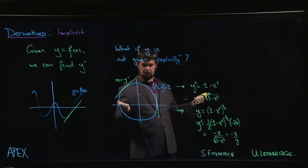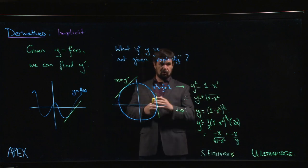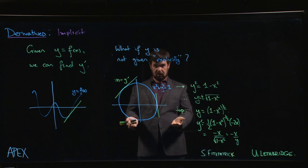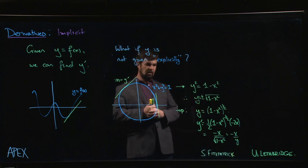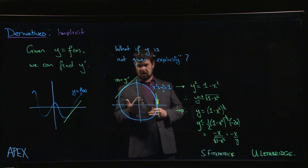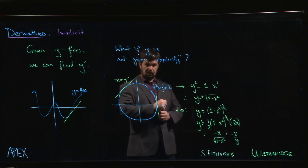But it should reproduce at least part of the curve. So this function here produces half the circle. If we had chosen the negative square root, it would produce the other half. Between the two we get everything.